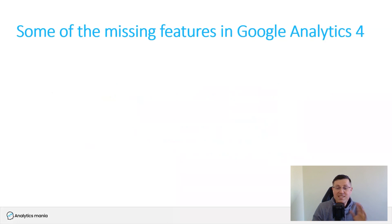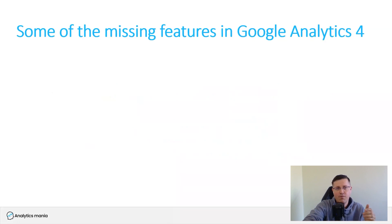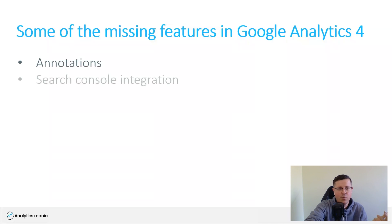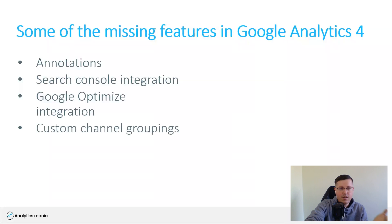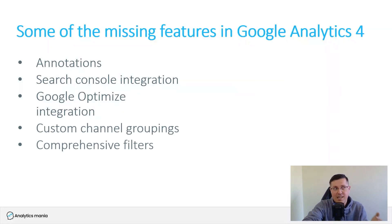Here are some of the missing features that might be deal breakers for you. These are not the full list, but these might be some things that are very important to you. So annotations — there are no annotations in GA4. Then there is no Search Console integration, no Optimize integration, no custom channel groupings, and no comprehensive filters, because in GA4 you can only filter out traffic based on your IP address, but you cannot do any other magic that was available in GA3.